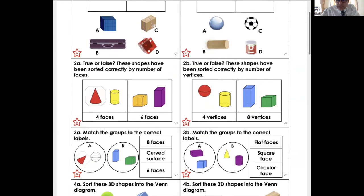True or false. These shapes have been sorted correctly by the number of vertices. A sphere - how many vertices has it got? No points. Oh, that's wrong. I don't think that, but that's for you to think.